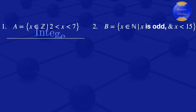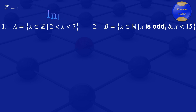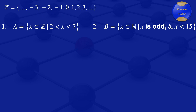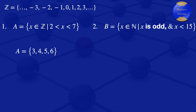The set of integers runs from negative infinity — minus 3, minus 2, minus 1, 0, 1, 2, 3 — up to infinity. For set A, we only want integers that are greater than 2 but less than 7. The elements in that range are 3, 4, 5, and 6. So set A equals {3, 4, 5, 6}.